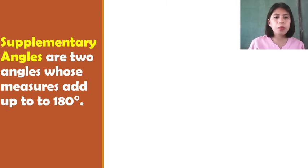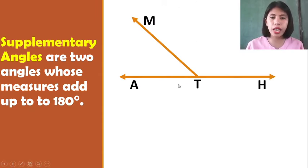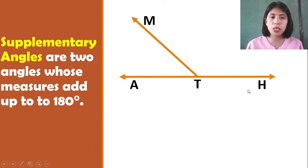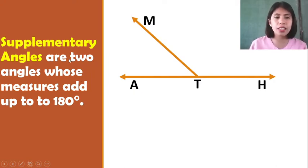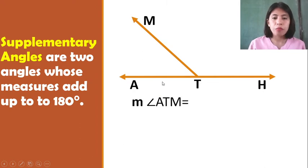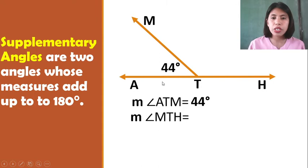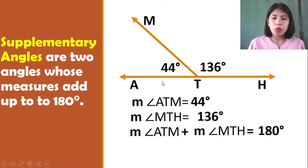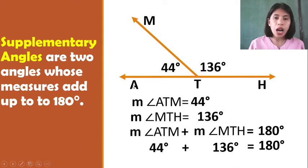Next, we have Supplementary Angles. Supplementary angles are two angles whose measures add up to 180 degrees. So we have this figure, we have angle A-T-M and angle M-T-H. The sum of measure angle A-T-M and measure angle M-T-H must be equal to 180 degrees so that we can say it is a supplementary angle. Measure angle A-T-M is equal to 44 degrees and measure angle M-T-H is equal to 136 degrees. So 44 degrees plus 136 degrees is equal to 180 degrees. Therefore, angle A-T-M and angle M-T-H are supplementary angles.